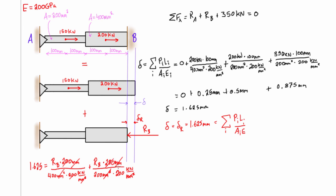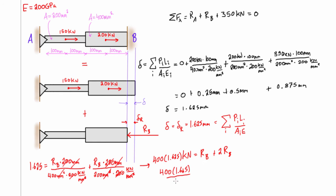We take 200 divided by 200 to simplify, leaving 1.625 equals RB over 400 plus RB over 200. Multiplying everything by 400, we get 400 times 1.625 in kilonewtons equals RB plus 2RB, which is 3RB. Therefore, 400 times 1.625 divided by 3 equals RB.